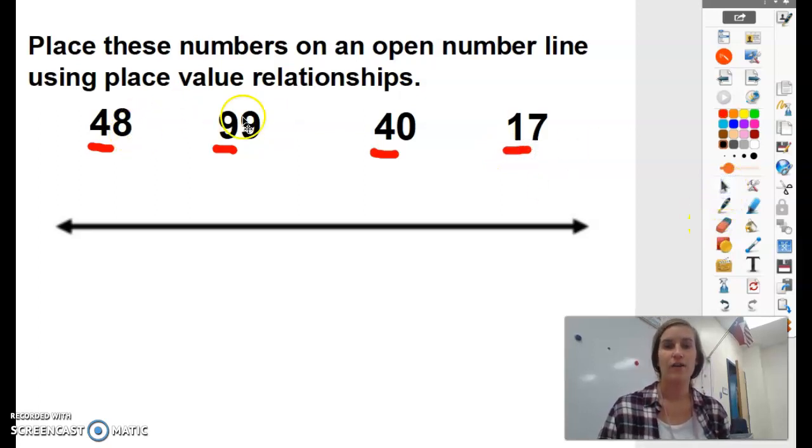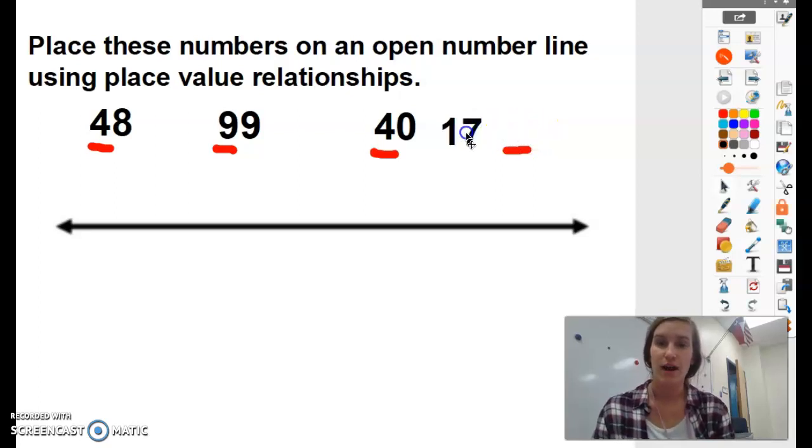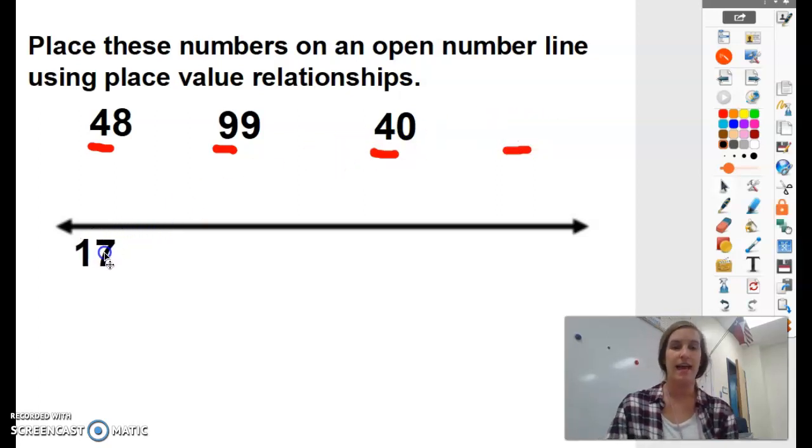So out of these four numbers, which number has the smallest amount of tens? 17, great job. It only has one ten. So that means that it's the number with the least value. So I'm going to move 17 to the end of our number line.